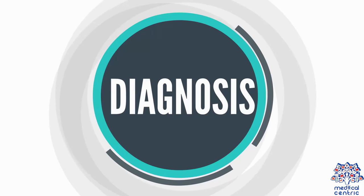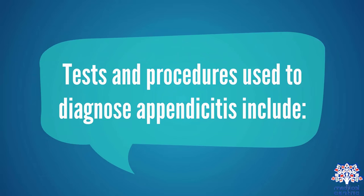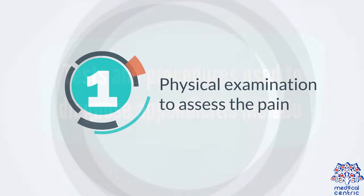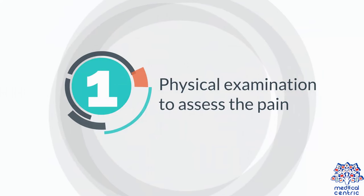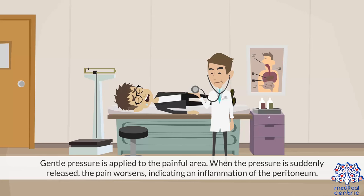Diagnosis and Treatment. Tests and procedures used to diagnose appendicitis include a physical examination to assess the pain. Gentle pressure is applied to the painful area. When the pressure is suddenly released, the pain worsens, indicating an inflammation of the peritoneum.